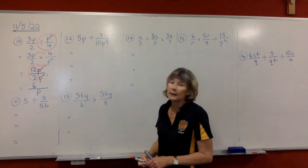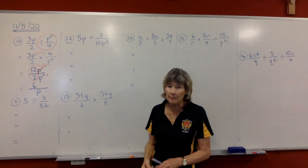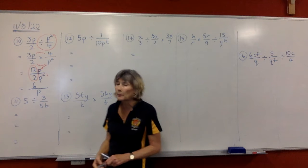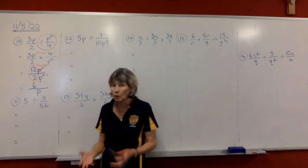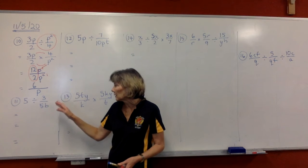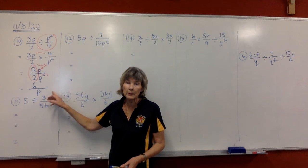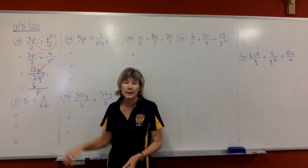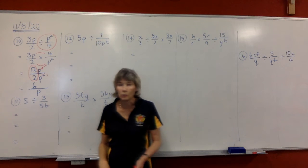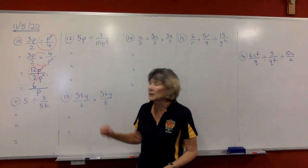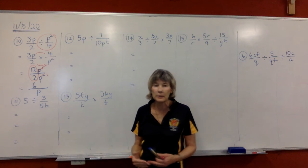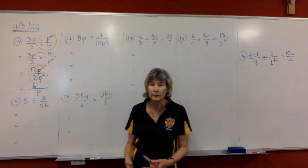That question will be badly done in the exam, because there's going to be a lot of people not sure what to do with the cancelling out, and a lot of people write this answer down as 6p — and it's wrong. It has to be 6 over p. Things have to be in the right spot in the fraction.